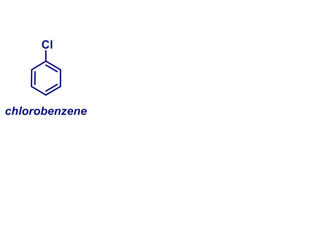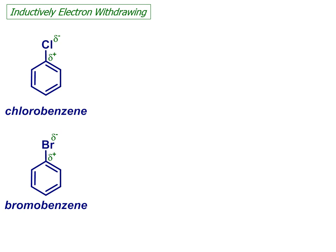There is one last set of substituents for us to consider. Chlorine and bromine are of course more electronegative than carbon, so they are inductively electron withdrawing.